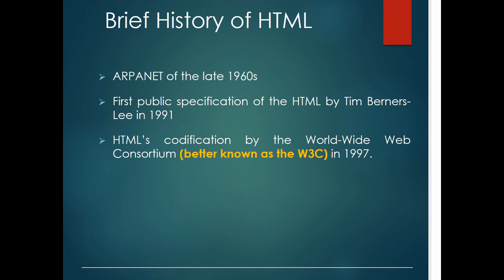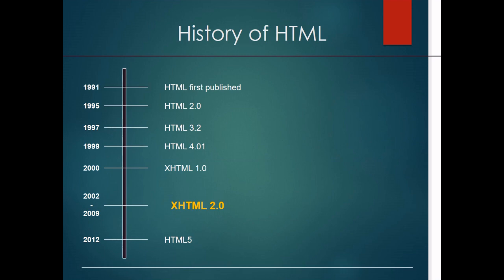In 1997, HTML codification was identified in W3C. So in 1991 the first HTML was published, and after that many different versions became available: HTML 2.0, 3.2, 4.0, and so on. XHTML 2.0 was very popular from 2000 to 2009, and from 2012 onwards HTML5 became available in the market.